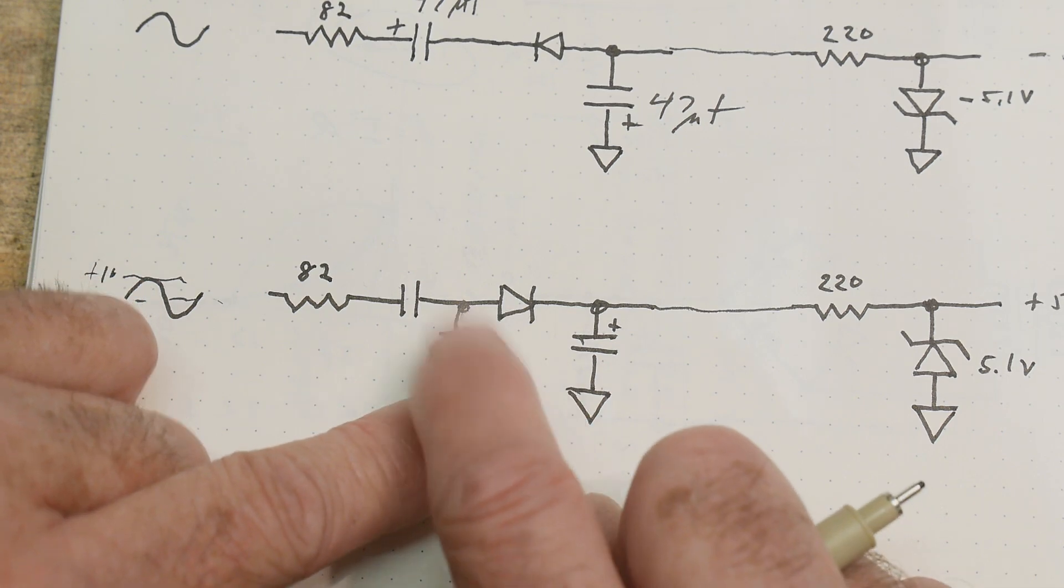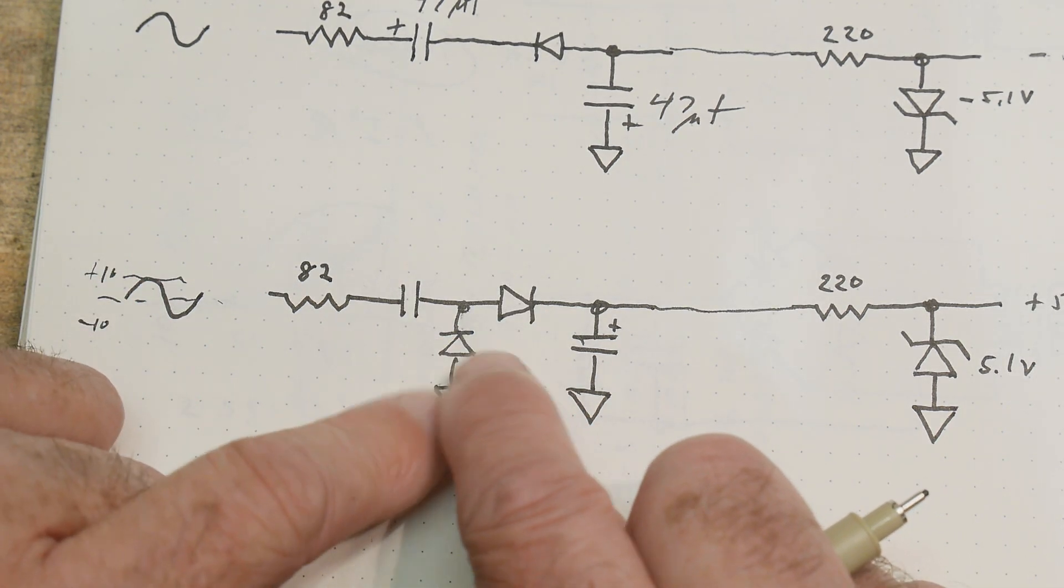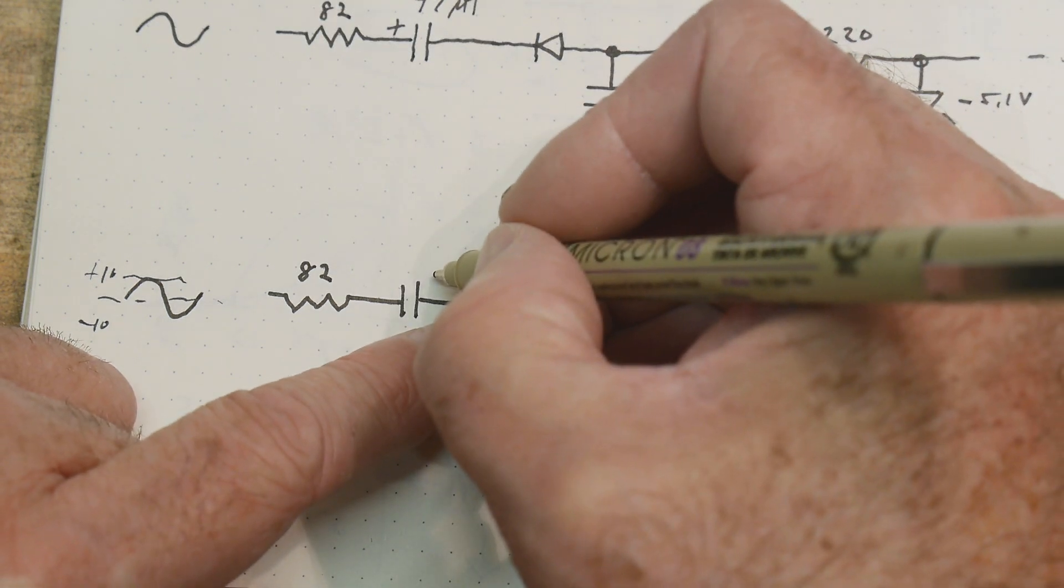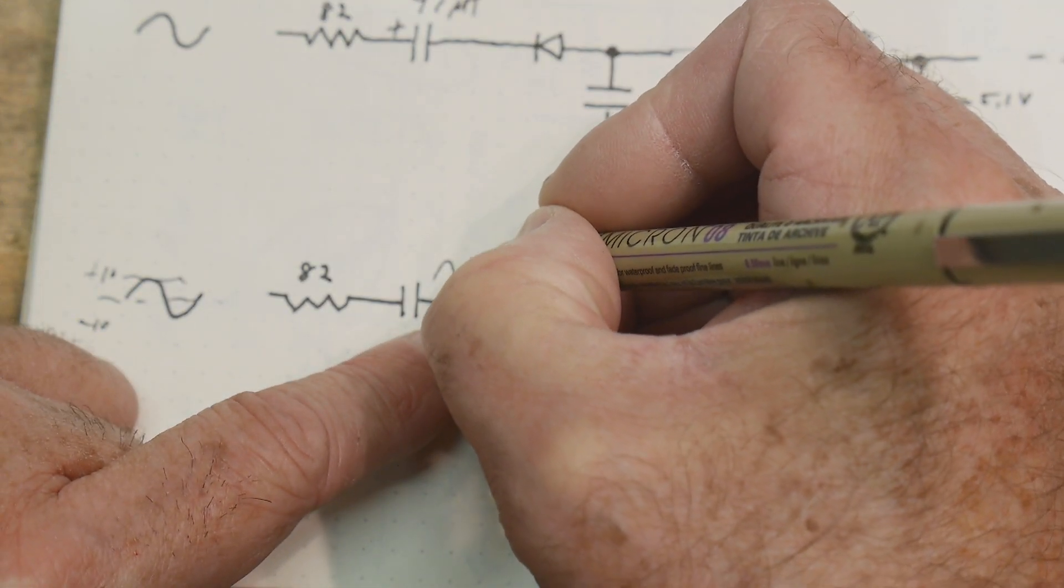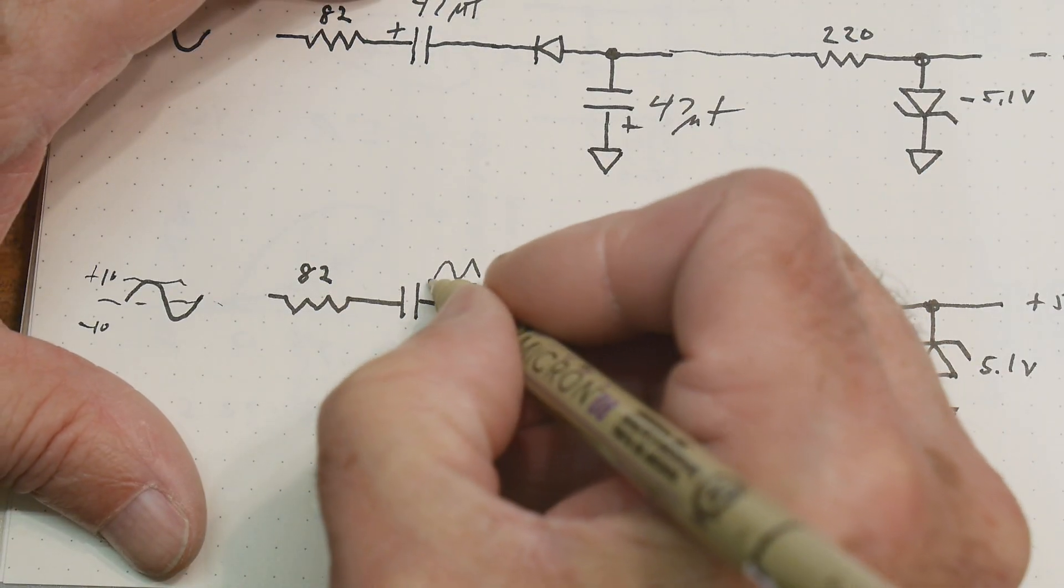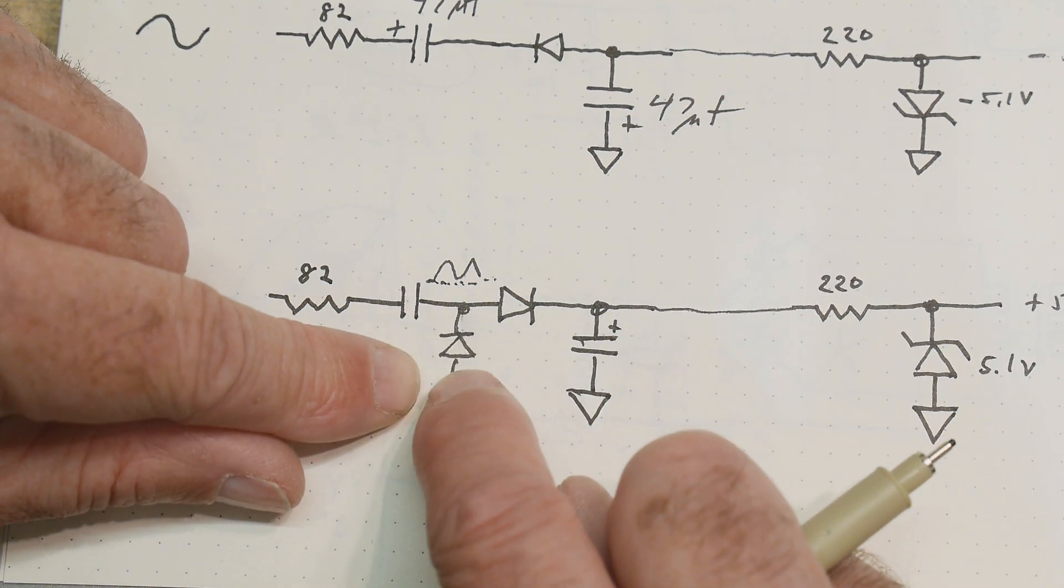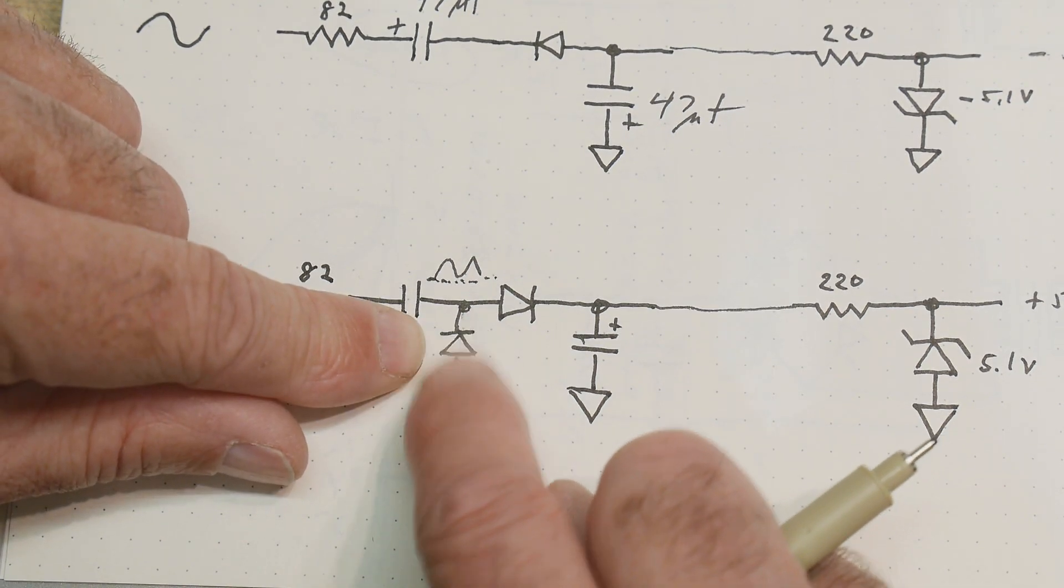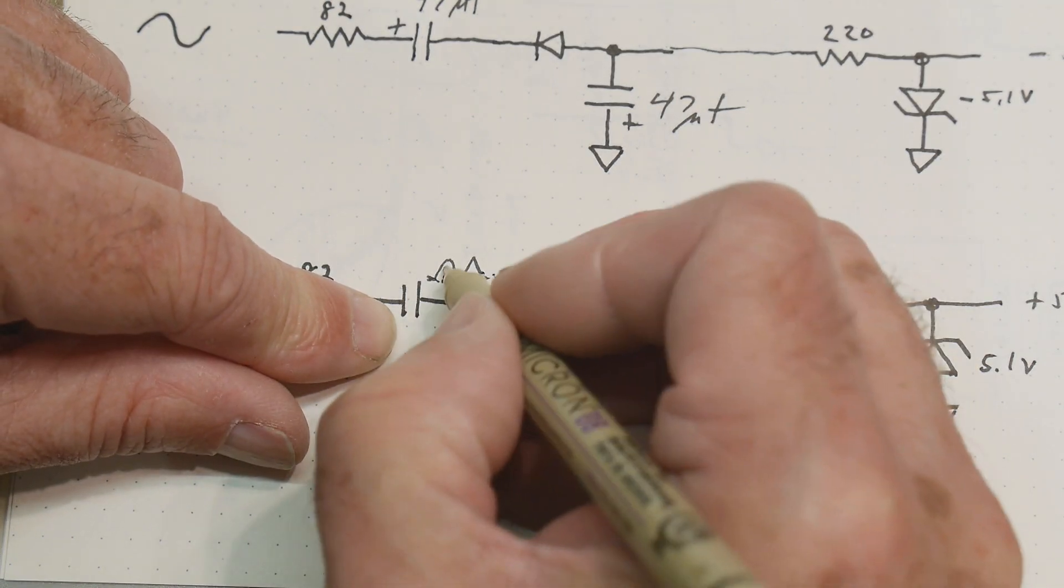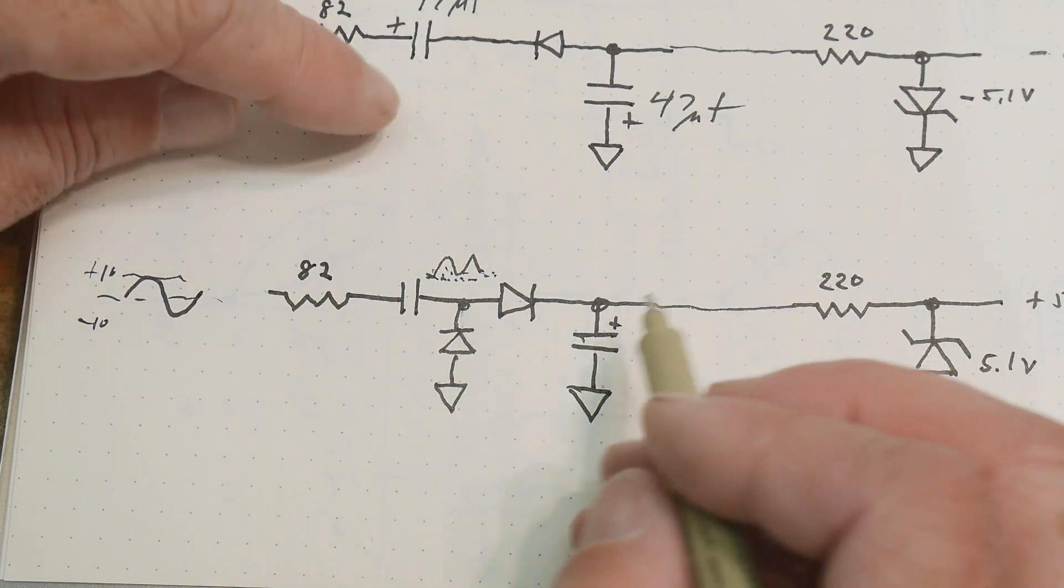But if we tell it, I don't want any negative voltages, then that plus or minus 10 will still be there. But it'll be all above ground. Or it will actually be all above 0.7 volts. So this will be 0.7 volts here. And so there'll be a little bit of negative voltages, but only 0.7 volts, where most of it will be up.